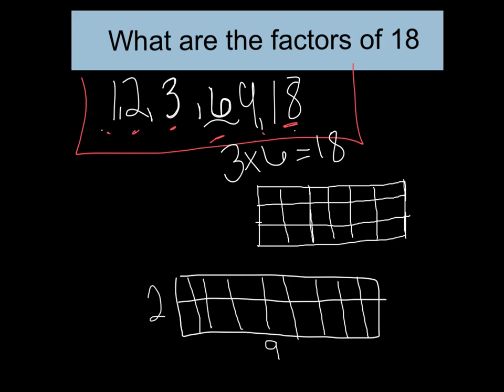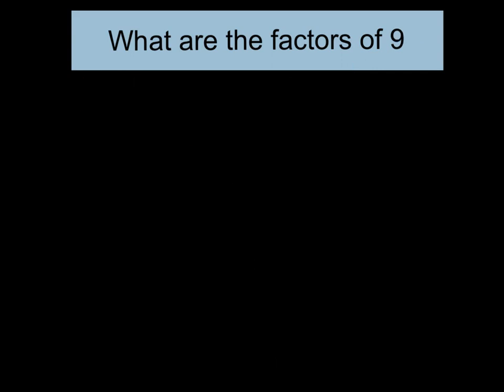Here's my array for 3 times 6 equals 18. Yours might look just a little different from mine, but that's okay. I did 3 rows and I placed 6 tiles in each row. And if I were to count these tiles all together, I would get 18 tiles.